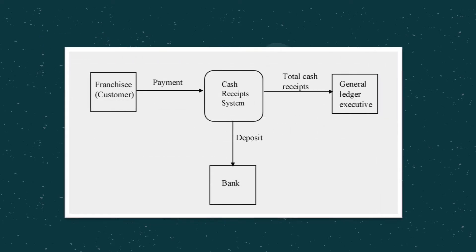For the cash receipt system, the franchisee makes payment 2 weeks after receiving the invoice. The franchisee can send in checks or pay using online banking facilities. The cash receipt clerk deposits the checks with a copy of the deposit slip to the bank. Lastly, the general voucher from the cash receipt clerk and the account summary from the accounts receivable clerk will be sent to the general ledger executives to reconcile before updating the general ledger control accounts.